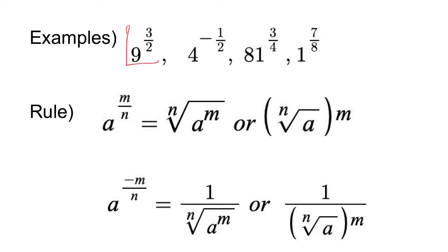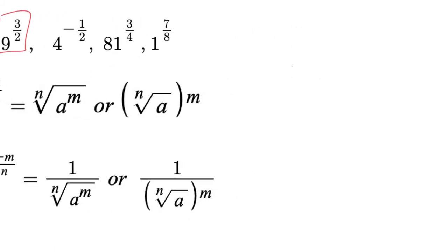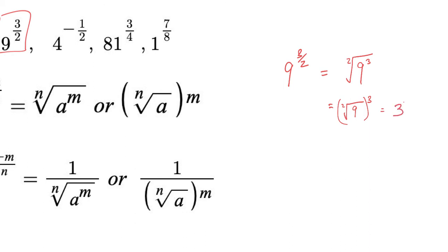So back to 9 to the 3 halves power. We can rewrite that: the 2 becomes the index number, and it would be 9 to the 3rd power underneath the radical. But 9 to the 3rd power is 729, and then you'd have to take the square root of 729 — I don't want to do that. Instead, what I can do is view it as the square root of 9, raised to the 3rd power. The square root of 9 is 3 — that's a number I can do in my head. So that simplifies down to 3 to the 3rd power, which is in fact 27.